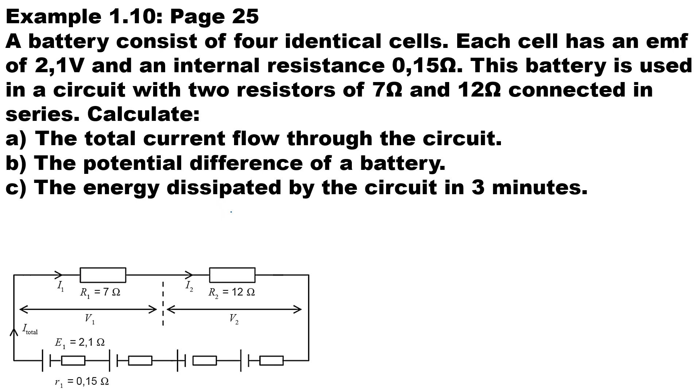In this video, a battery consists of four identical cells. Each cell has an EMF of 2.1 volts and an internal resistance of 0.15 ohms. This battery is in a circuit with two resistors of 7 ohms and 12 ohms connected in series. I've drawn these four identical cells connected in series with the two external resistors.